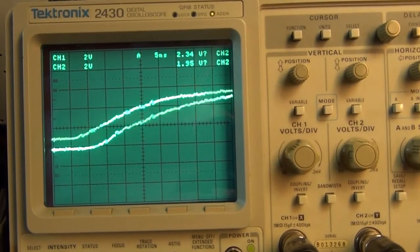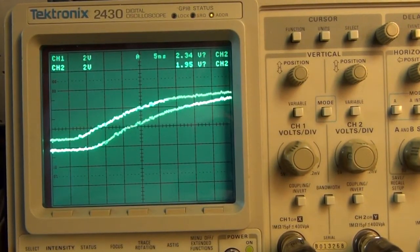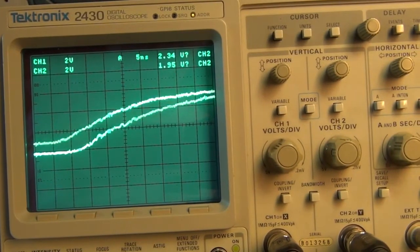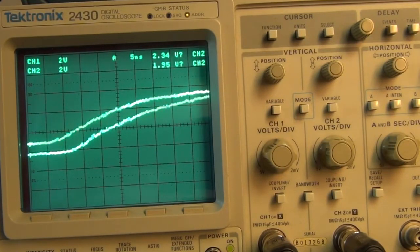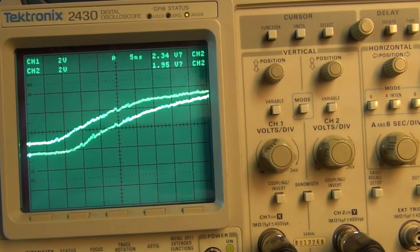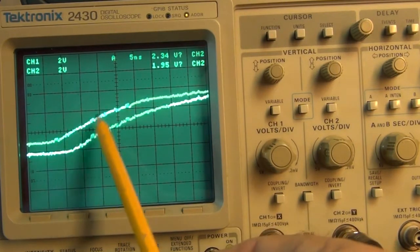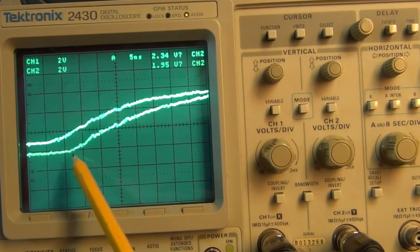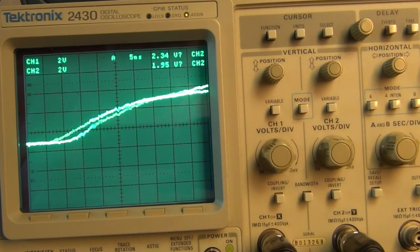Here you see the signal on an old Tektronix oscilloscope. This scope is about 25 years old, and I have it set at 5 nanoseconds per division. This is the input and this is the output, and you can see the delay. I can move them a little closer there. They're right on top of each other at 5 nanoseconds.